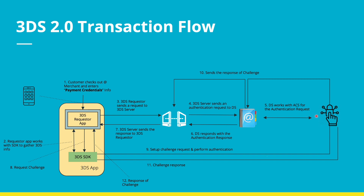Here if it is a frictionless flow, this entire leg of challenge would not be there. The issuer would say hey the app seems to be legitimate, the SDK seems to be legitimate. And the value of the transaction is let's say it is less than five dollars.